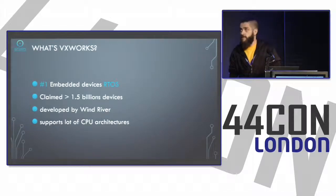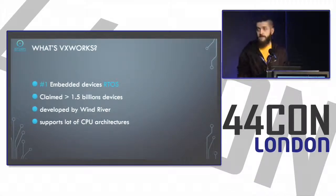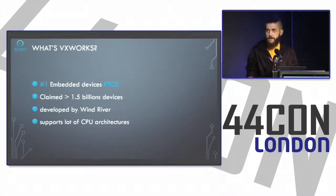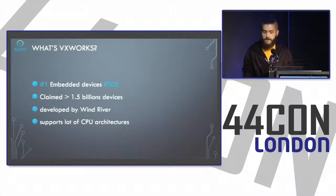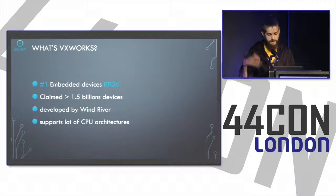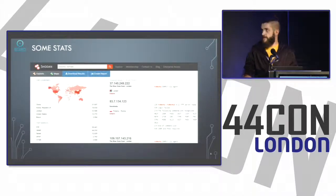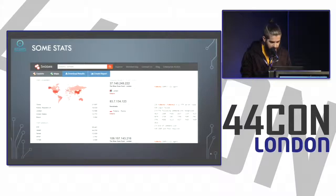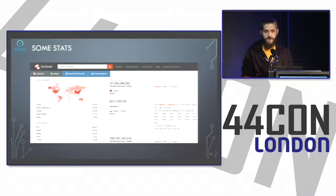For people who don't know VxWorks, it's the number one embedded device real-time OS. Wind River claims it runs on over 1.5 billion devices. It supports a lot of CPU architectures: x86, ARM, x86-64 recently, MIPS, PowerPC, and so on. I verified we could find a lot of VxWorks devices online — about 123K VxWorks devices facing the internet, mainly version 5 and some version 6.